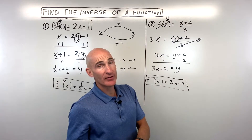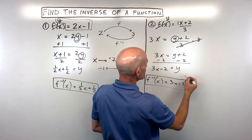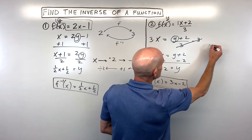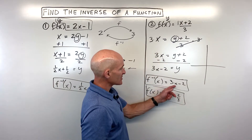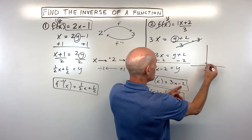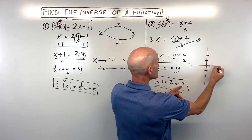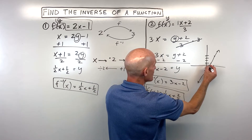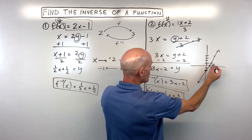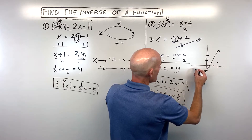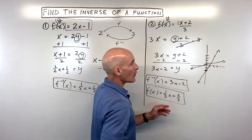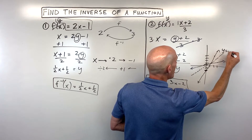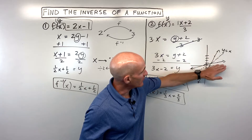Let's look at this graphically. The original function is really ⅓x plus ⅔. If we graph both functions, the inverse has a y-intercept of negative 2 and a slope of 3 — up 3, over 1. The original has a y-intercept of ⅔ and a slope of ⅓ — rise 1, run 3. One thing you'll notice is that these two graphs are reflections over the 45-degree line y equals x. Graphically, inverse functions are reflections over y equals x.